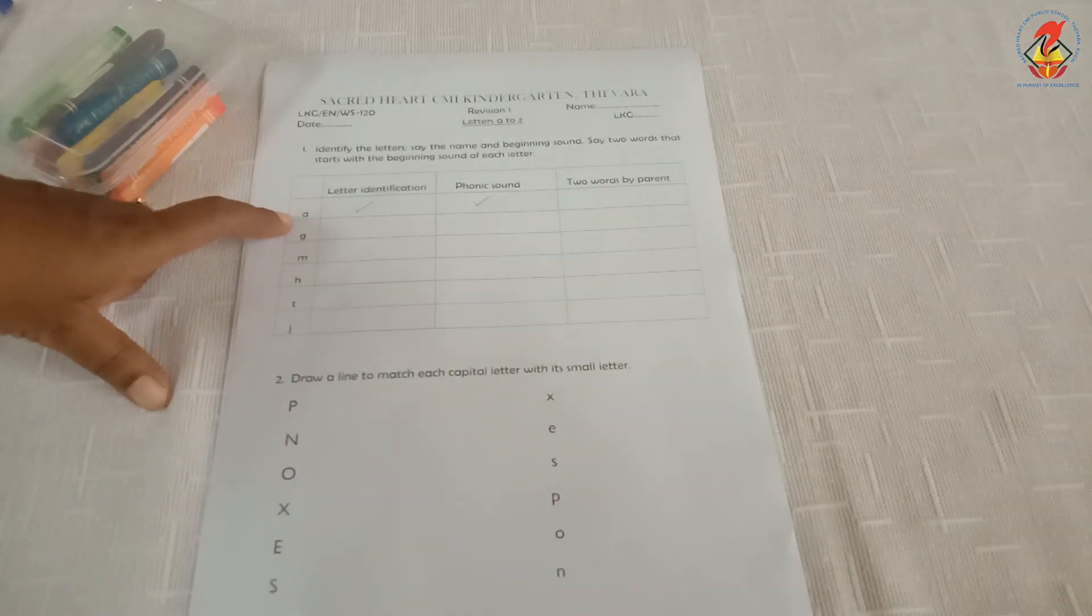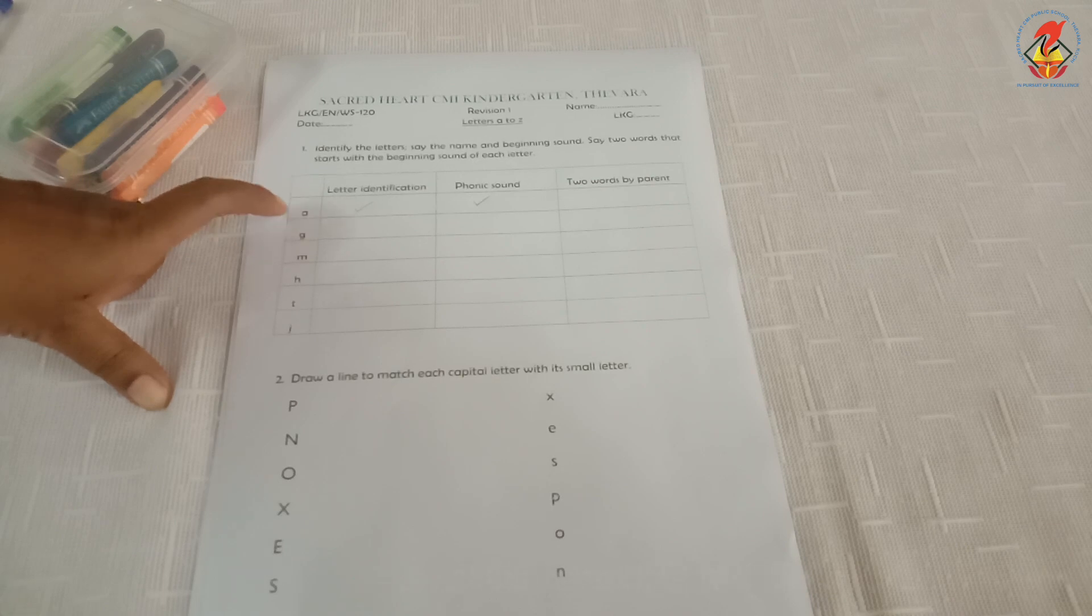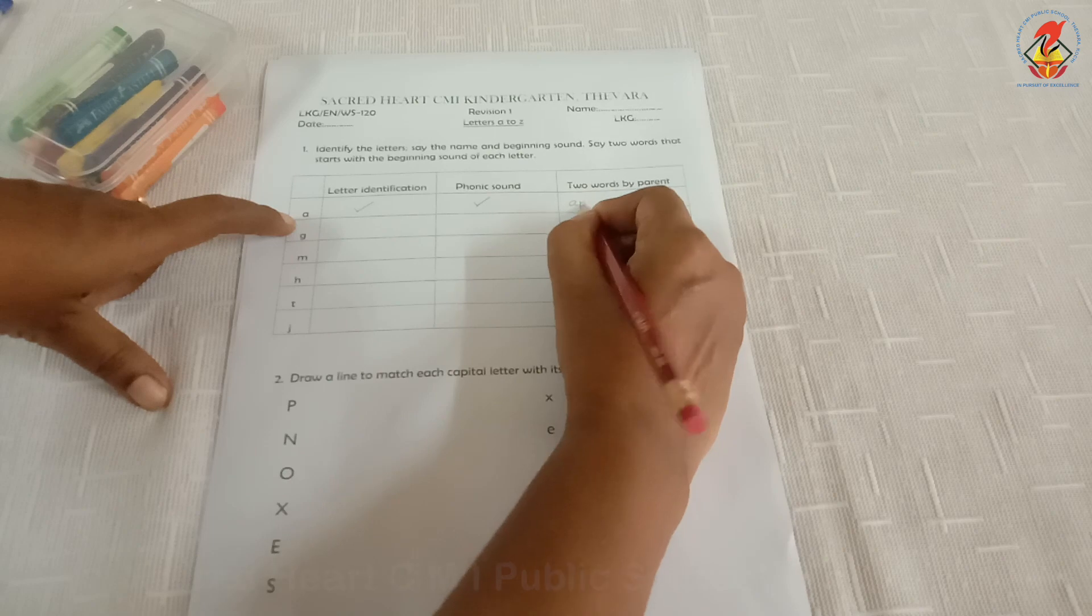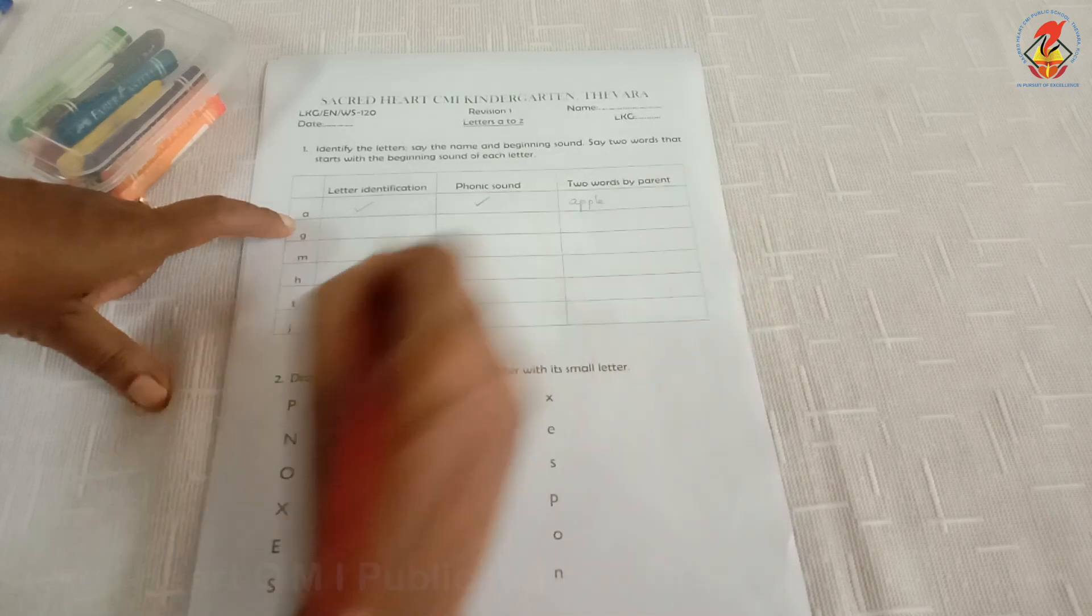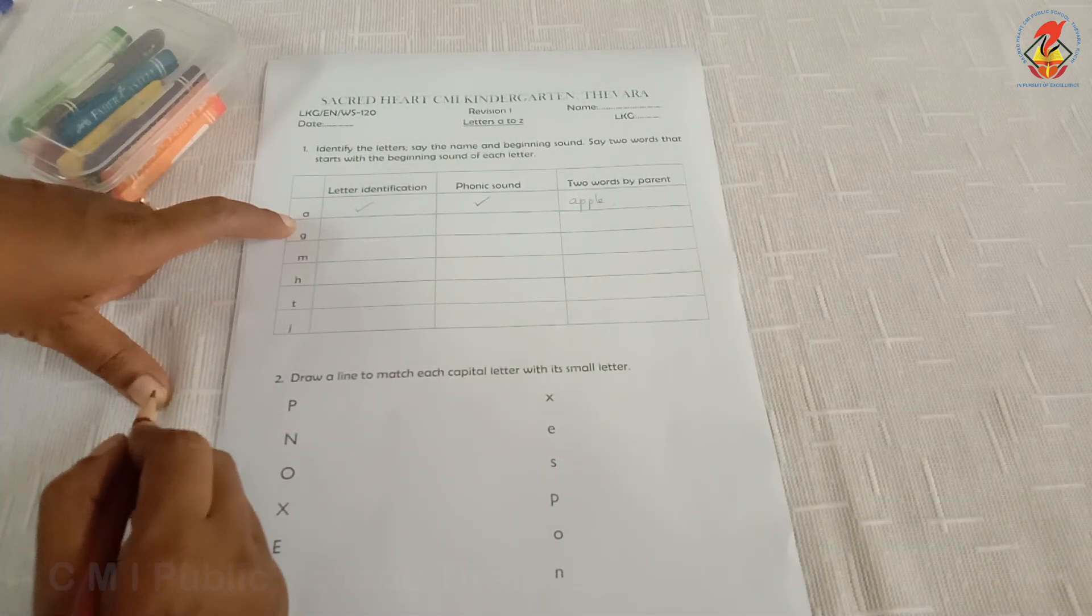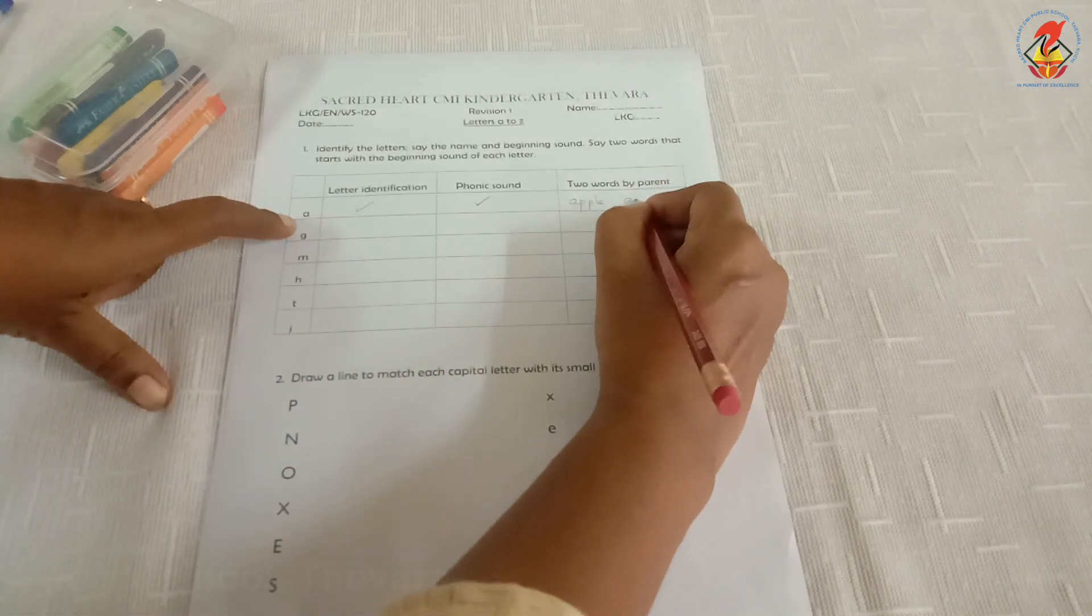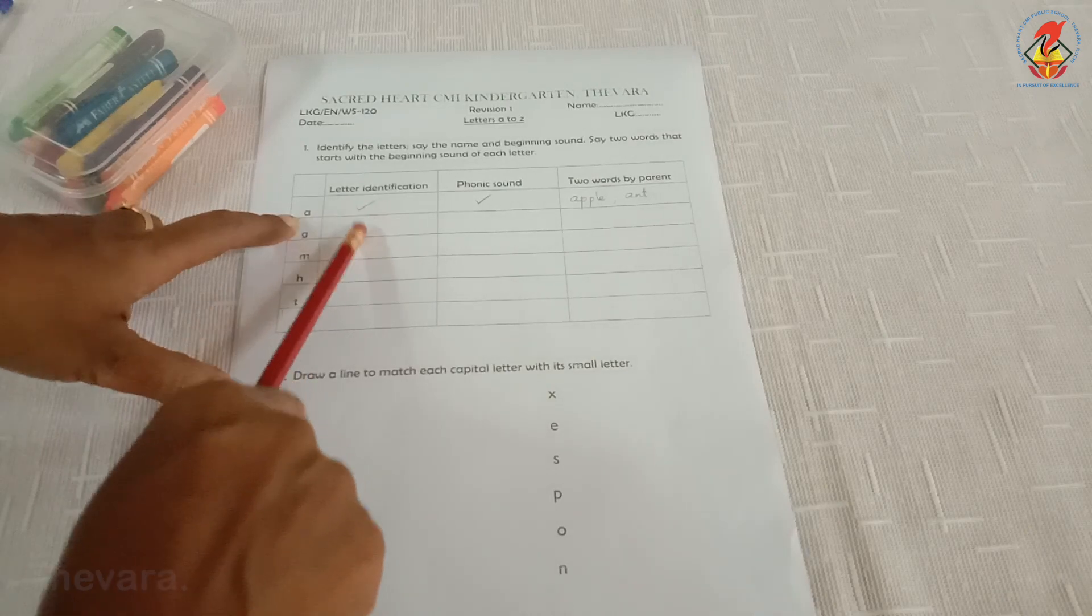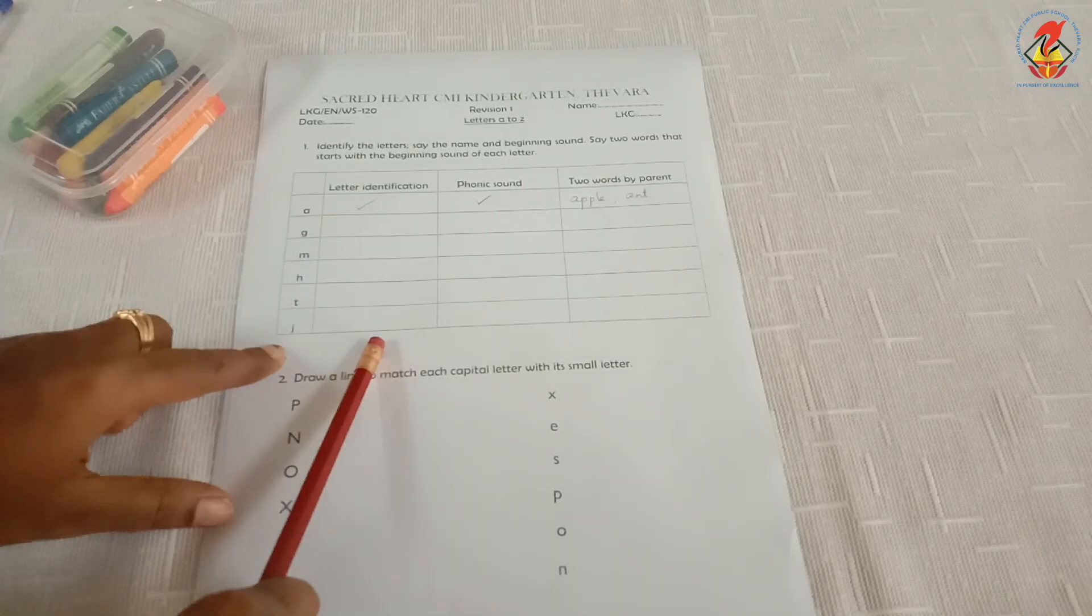And what are the words you have learnt for letter A? Apple. Parents, write here two words, like this: apple, ant. In the same manner, we have to do this first question.